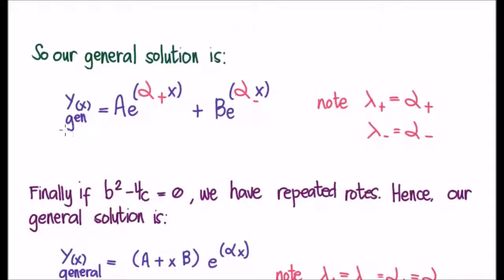And this means that our general solution is going to be given by, so y general is our general solution, is a e to the alpha plus x, that's our first particular solution, and b e to the alpha minus x, that's our second particular solution.